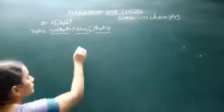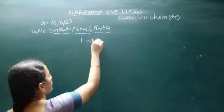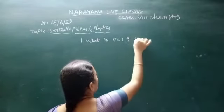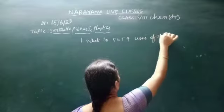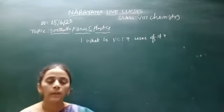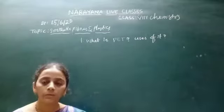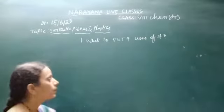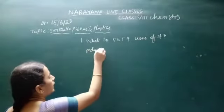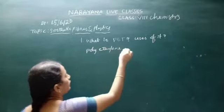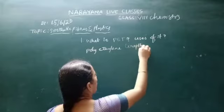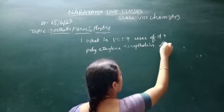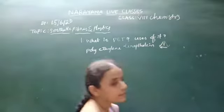PET is a type of plastic. Its abbreviation is polyethylene terephthalate. It is a code 1 plastic. Its recycling code is 1.